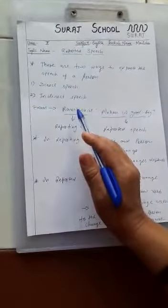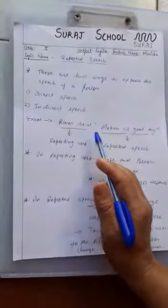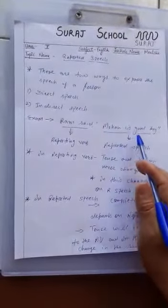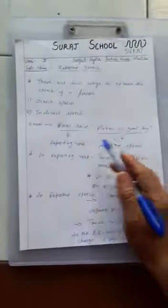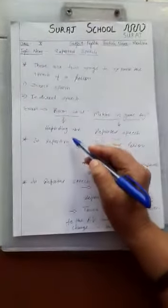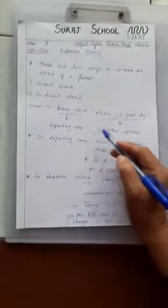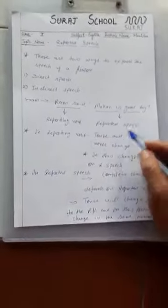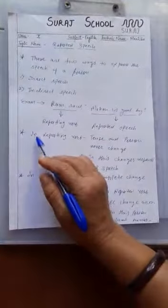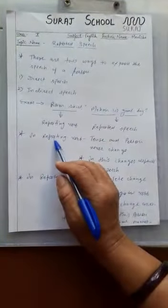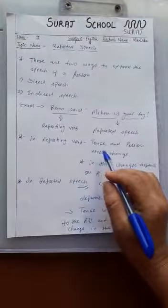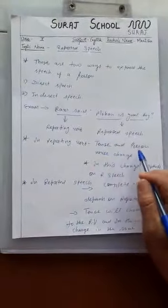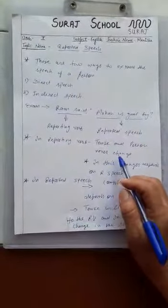For example, 'Ram said Mohan is a good boy.' Here there are two parts of the sentence: one is Reporting Verb and the second is Reported Speech. First, I am going to explain Reporting Verb. In Reporting Verb, Tense and Person never change.